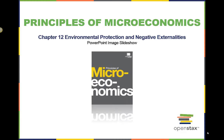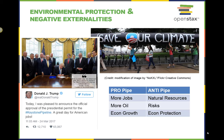Welcome to Chapter 12, Environmental Protection and Negative Externalities. Across the country, countless people have protested, even risking arrest, against the Keystone XL Pipeline. President Trump has encouraged the building of the pipeline through executive order, saying that it would bring jobs and support growth in the economy. If we take a look at this issue and other similar issues through the lens of economics, it will help us understand that both sides have valued arguments that impact the entire economy and individuals and firms within the economy.